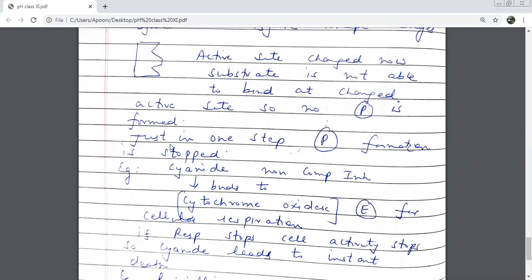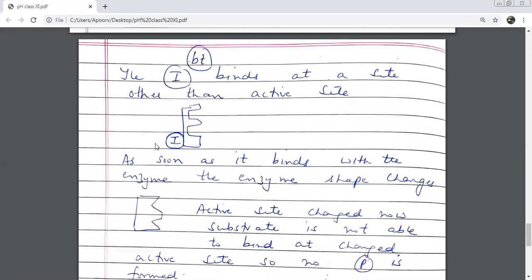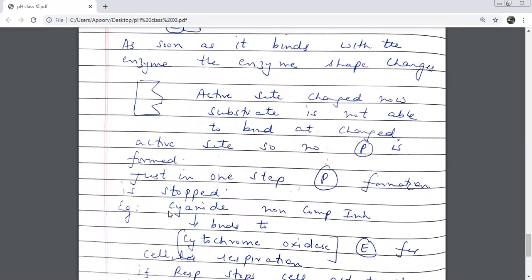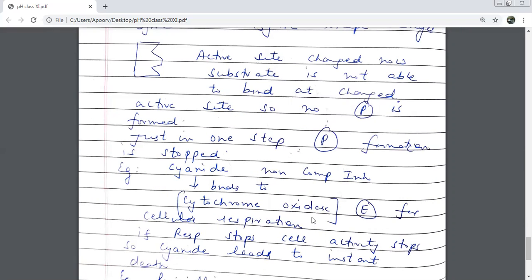That is the reason cyanide leads to instant death in one step. Just in one step, the product formation is stopped. As soon as you attach the inhibitor to the enzyme, it will not be able to do the active site because of the lock-in mechanism. But as soon as it will bind, it will be one step where the shape will change. Like I gave you an example of the enzyme cytochrome oxidase.